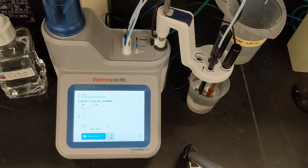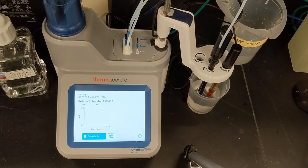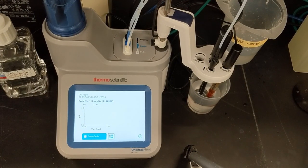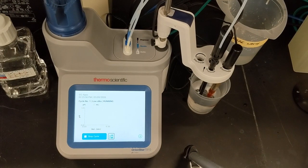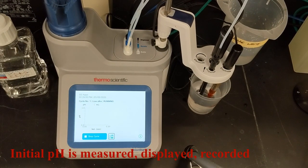The titrator begins a pre-stir and starts measuring pH. The progress of the titration will be shown live on the screen. When the pH reading stabilizes, the initial pH of the sample is displayed.